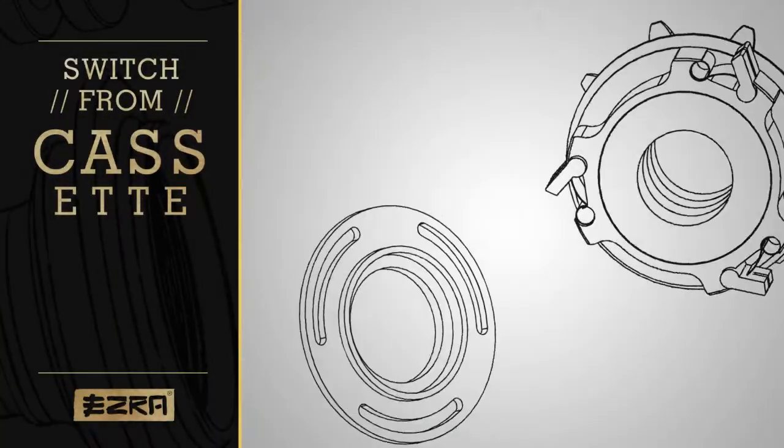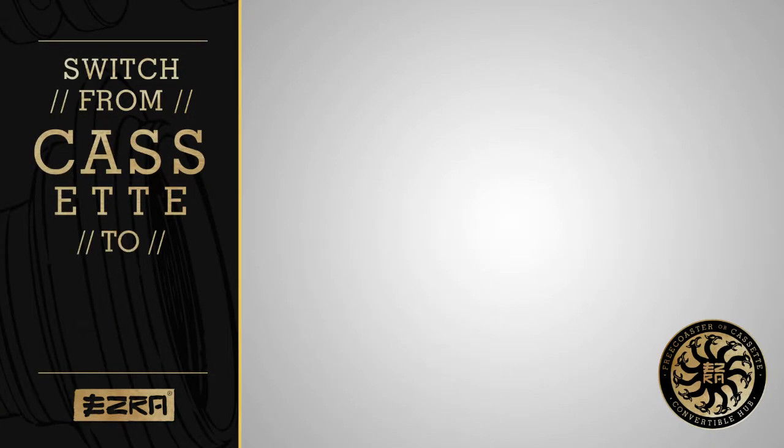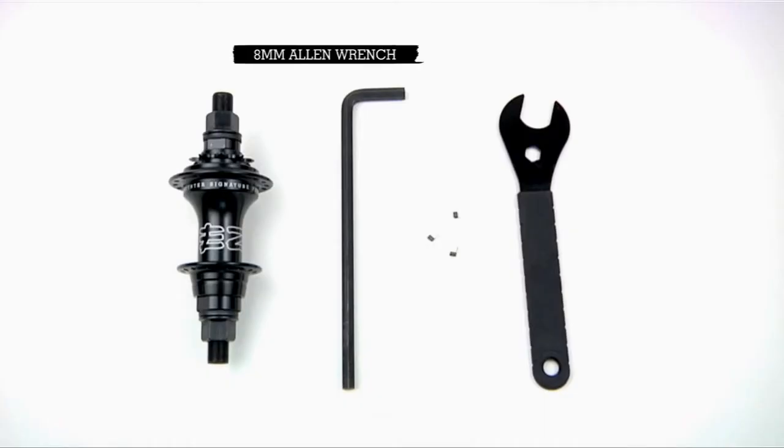This video will show you how to switch the Ezra Freecoaster hub from cassette drive to Freecoaster. The tools needed are an 8mm Allen wrench and a 21mm spanner wrench.